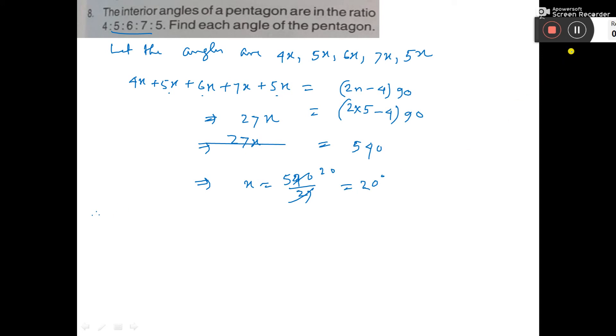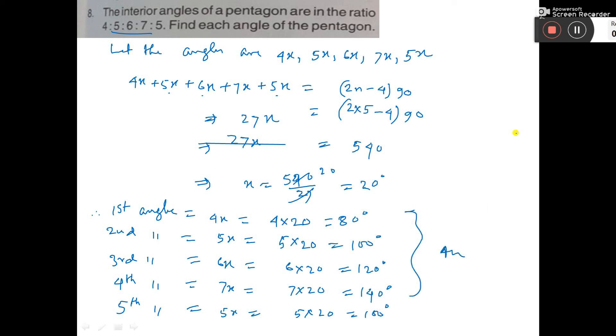Therefore, the first angle is 4x = 4 × 20 = 80 degrees. Second angle is 5x = 100 degrees. Third angle is 6x = 120 degrees. Fourth angle is 7x = 140 degrees. Fifth angle is 5x = 100 degrees. So all the angles we have got. This is the answer.